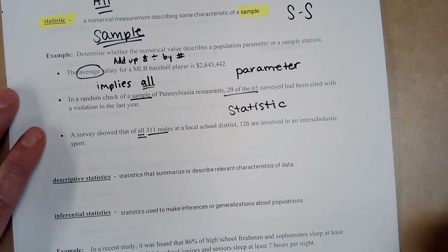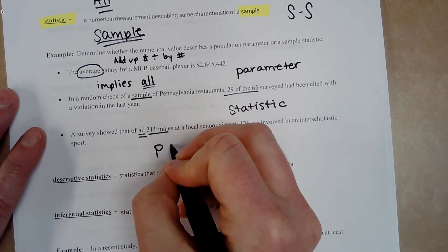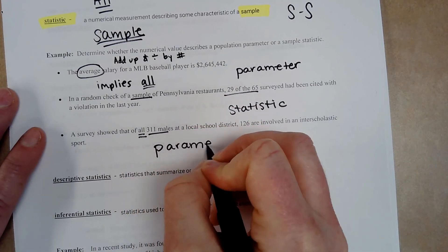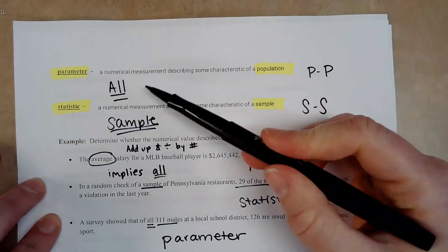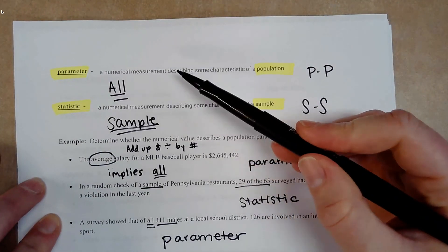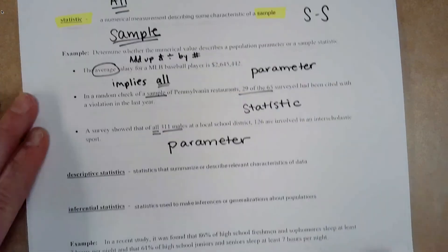So since they talked about all, this is a parameter. Remember, a parameter is a numerical measurement describing some characteristic of a population.